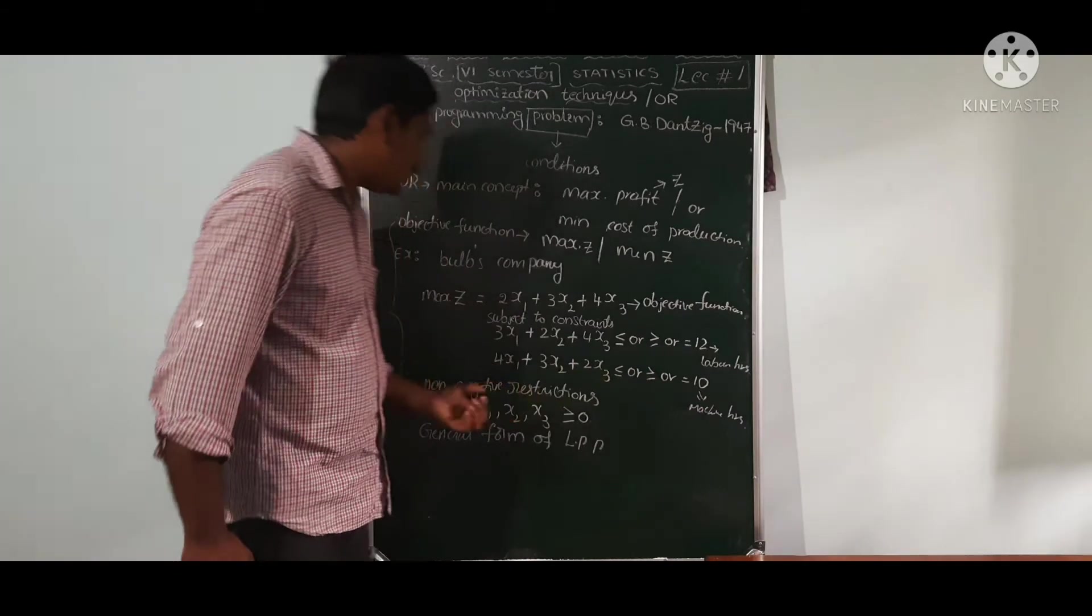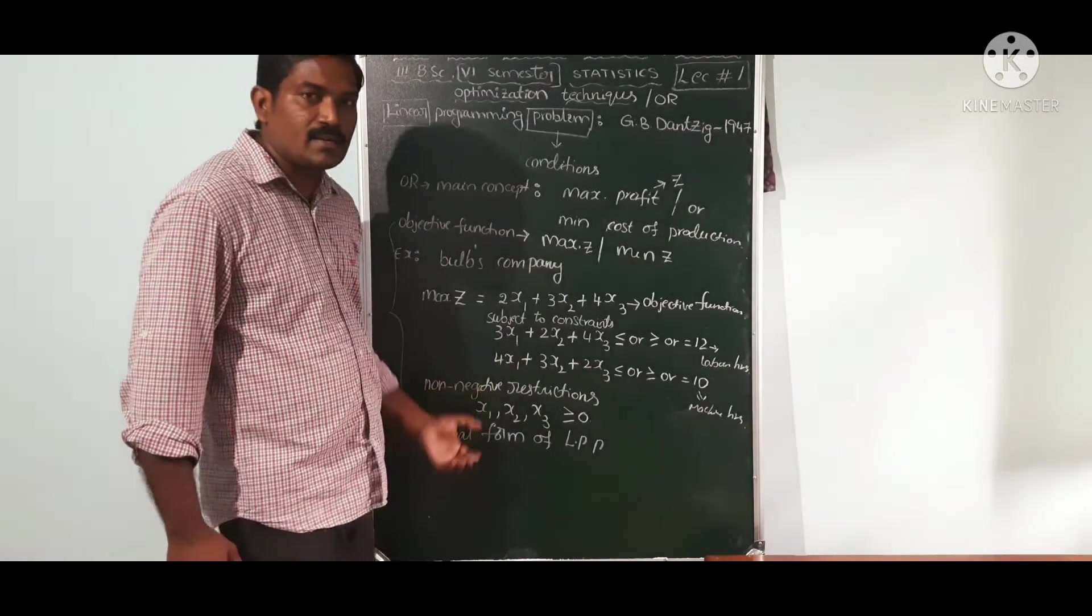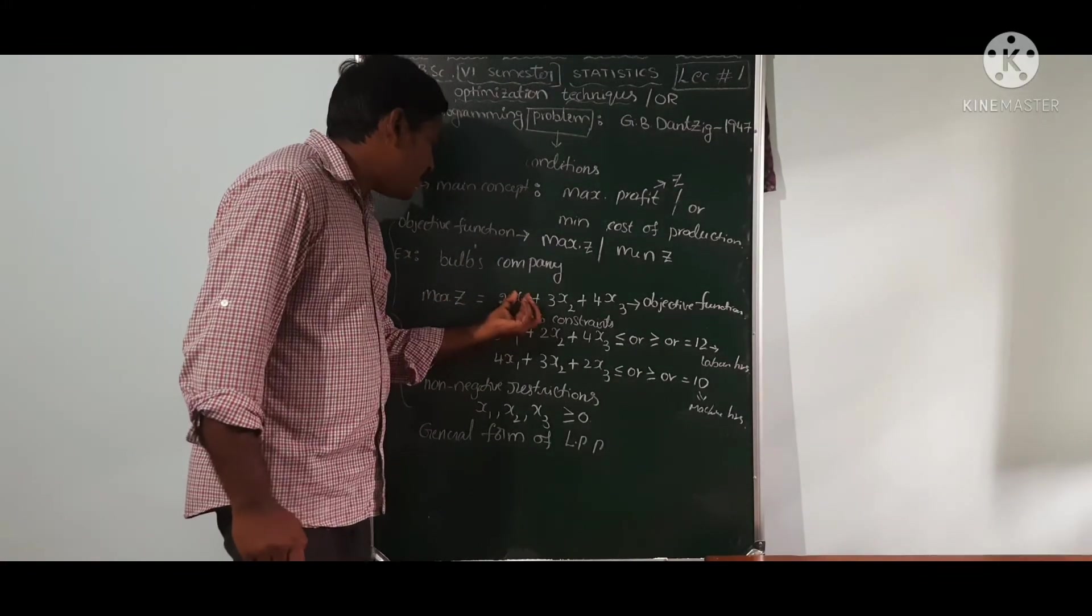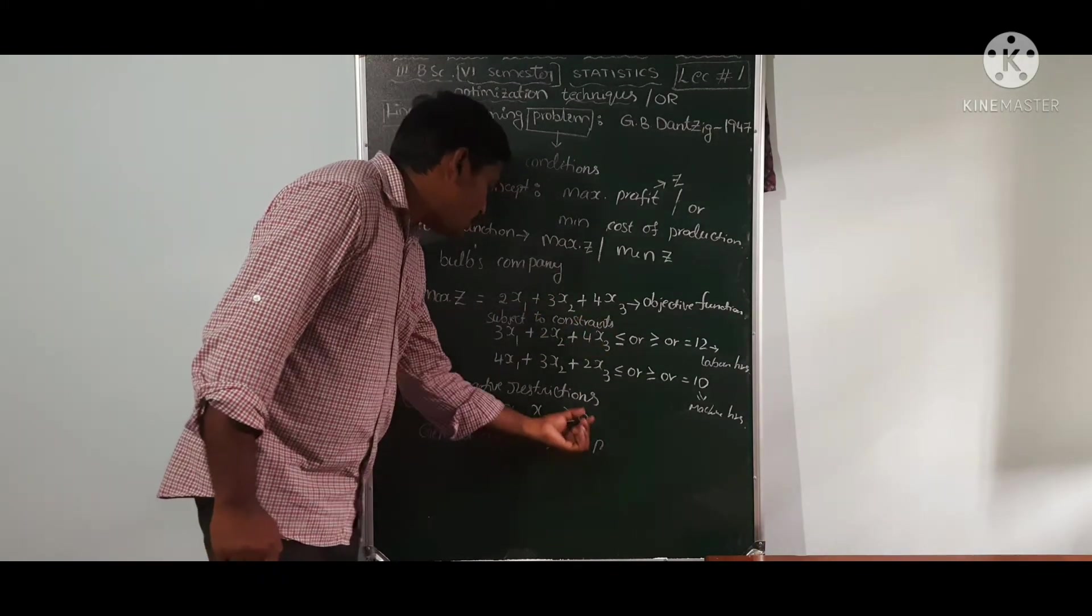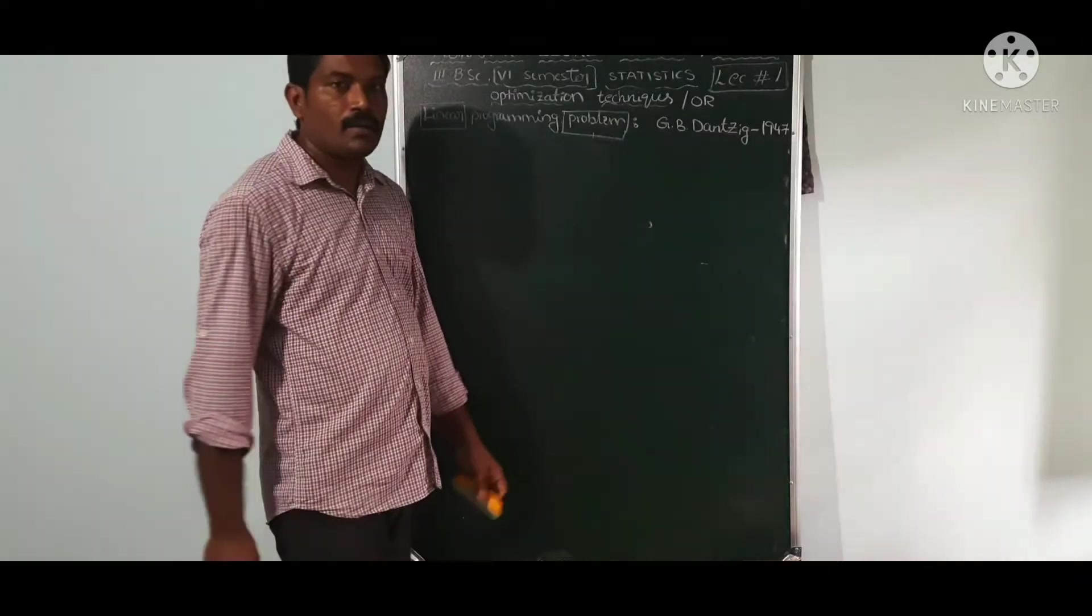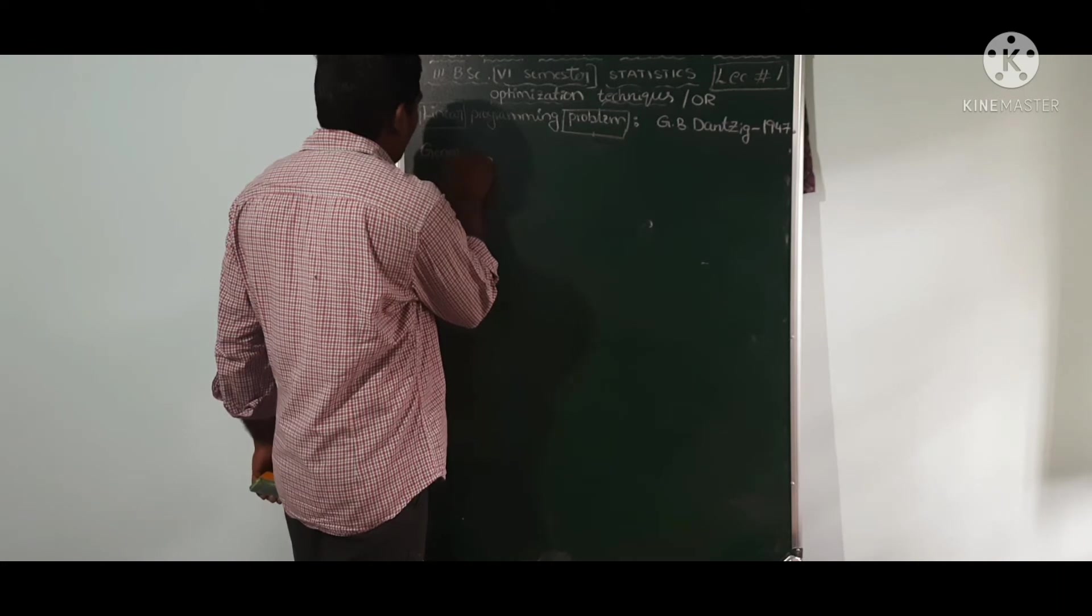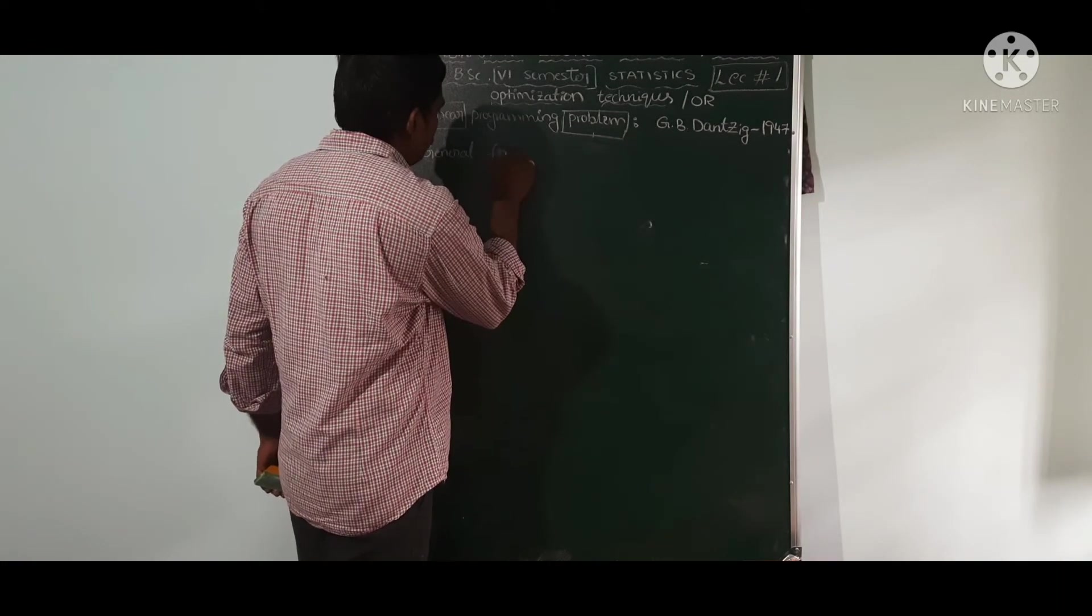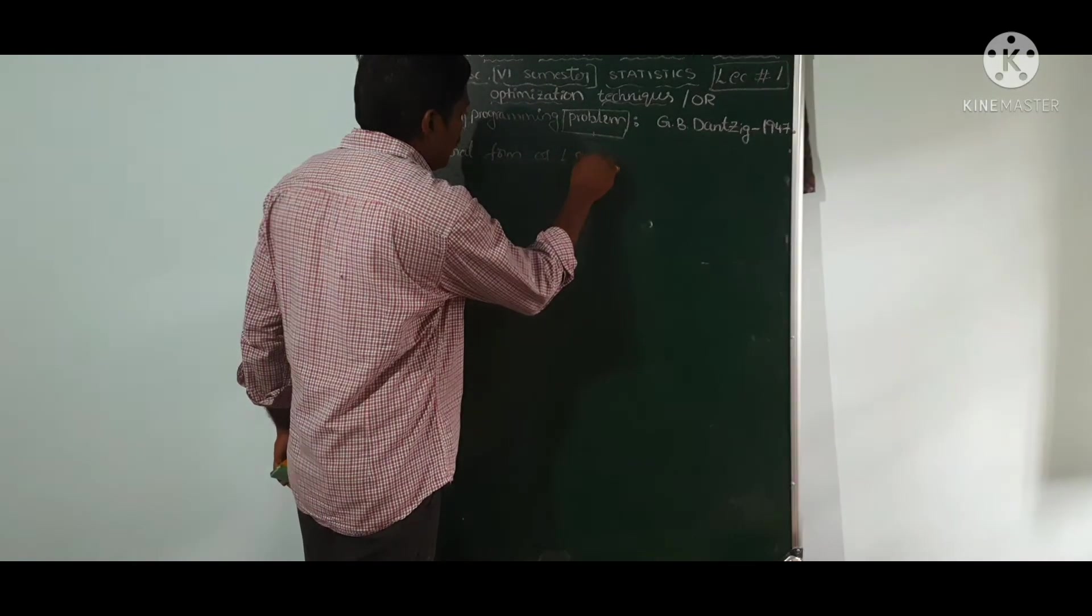x1 is 7 hours, x2, x1 is 4 hours, x2 is 1, x1 is 6, x2 is 1. x1, x2, x3 greater than or equal to 0. You know that the general form of LPP. General form of LPP.